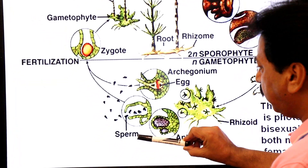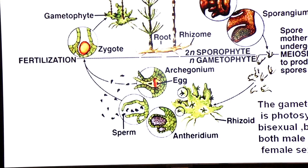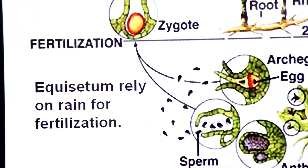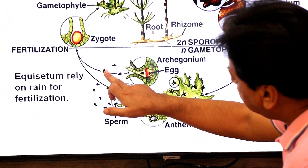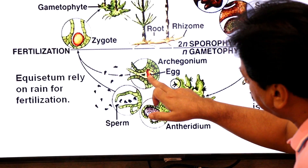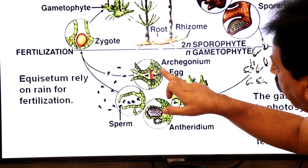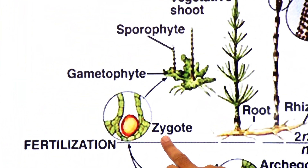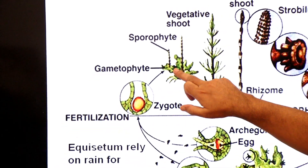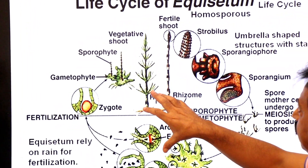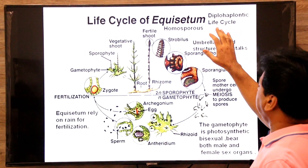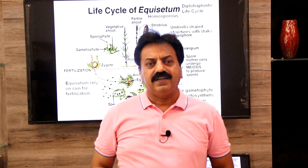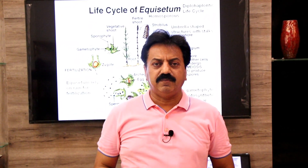Since the sperms of Equisetum are flagellated, water is required for fertilization. Equisetum relies on rain for fertilization — the sperms swim through water and enter through the neck of the archegonium. One sperm fuses with the egg to form a diploid zygote. The zygote develops into an embryo, and the embryo develops into a new sporophyte. Such a life cycle is called a diplo-haplontic life cycle. Today we have covered class Sphenopsida, a class of vascular plants.